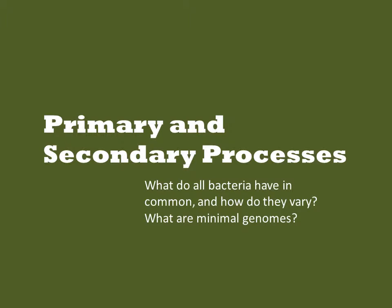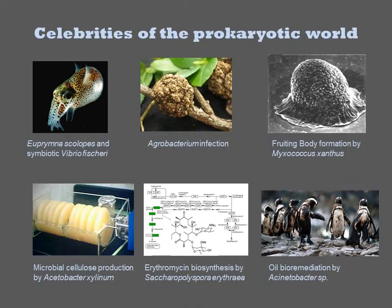Prokaryotes are extremely diverse in some ways and extremely self-similar in other ways. For example, there are many phenotypes that are only observed in one specific strain. For example, Vibrio fischeri forms light-generating organs within a specific species of squid. Other bacteria interact with plants, such as Agrobacterium.